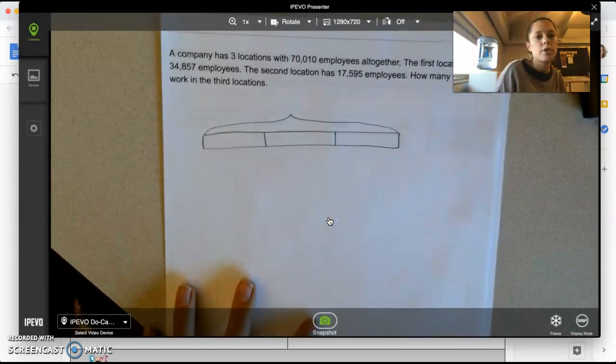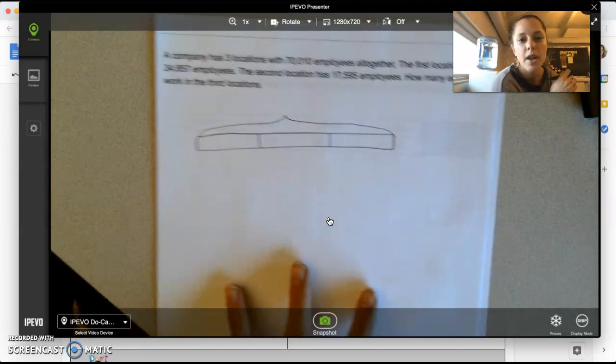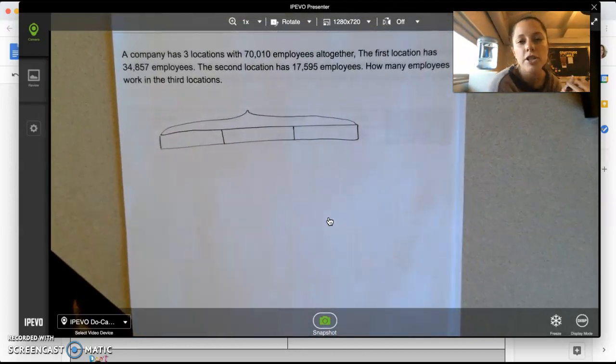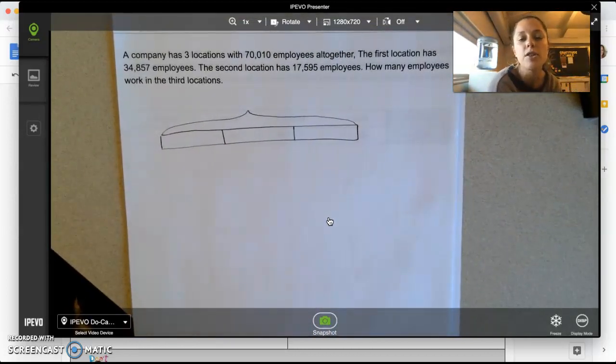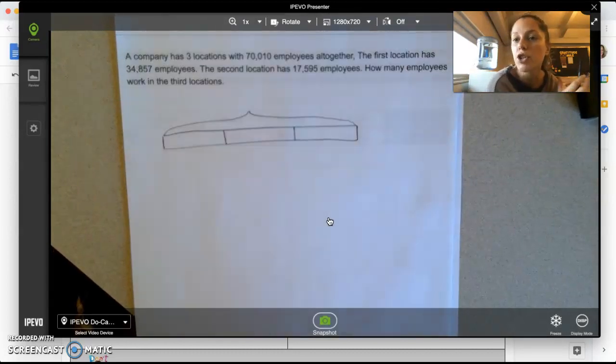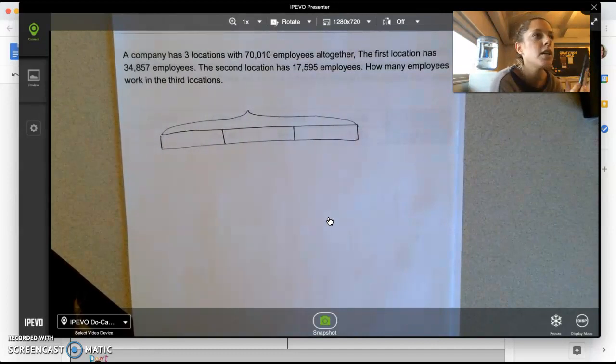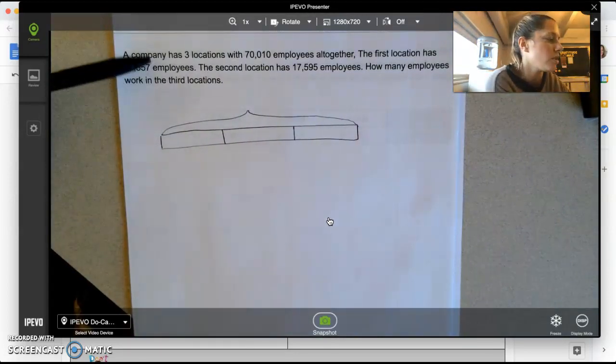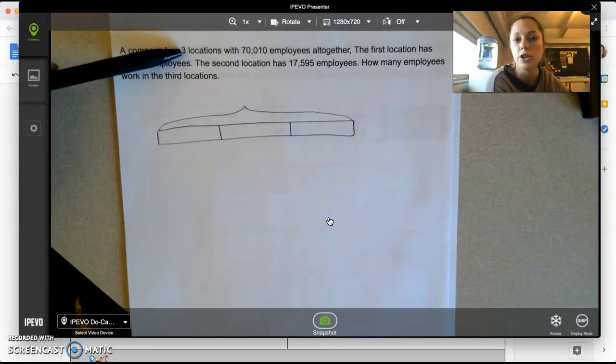The first question I'm going to model for you is this one. A company has three locations with 70,010 employees altogether. I can picture companies like McDonald's with more than one location, Target, Market Basket—all have more than one location. So this particular company has three locations. Can you picture it too? Great.